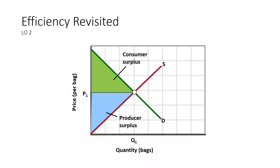Now in an efficient market, when the market achieves efficiency, the maximum combined consumer and producer surplus is achieved. At quantity Q1 where the equilibrium price is $8, the consumer surplus shown by the green triangle and the producer surplus shown by the blue triangle are maximized. Efficiency occurs — the right amount is being produced, everybody's surplus is at the maximum, and there's no over or under allocation of resources.